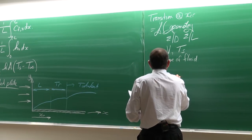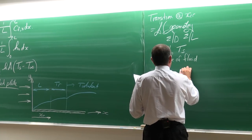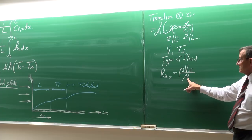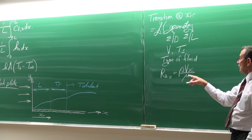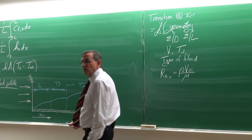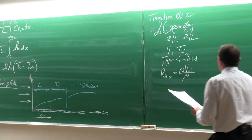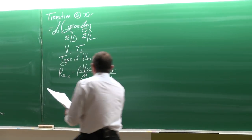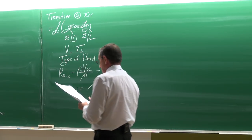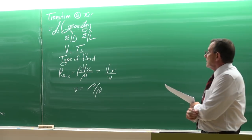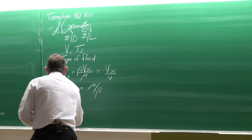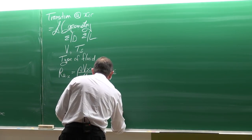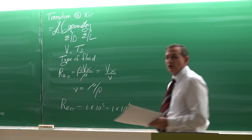To determine transition we use the local Reynolds number: Re_x = rho·V·x divided by viscosity, which can also be written as V·x divided by the kinematic viscosity ν, where ν equals dynamic viscosity divided by density. For a flat plate, transition typically occurs between Reynolds numbers of 100,000 and 1,000,000.